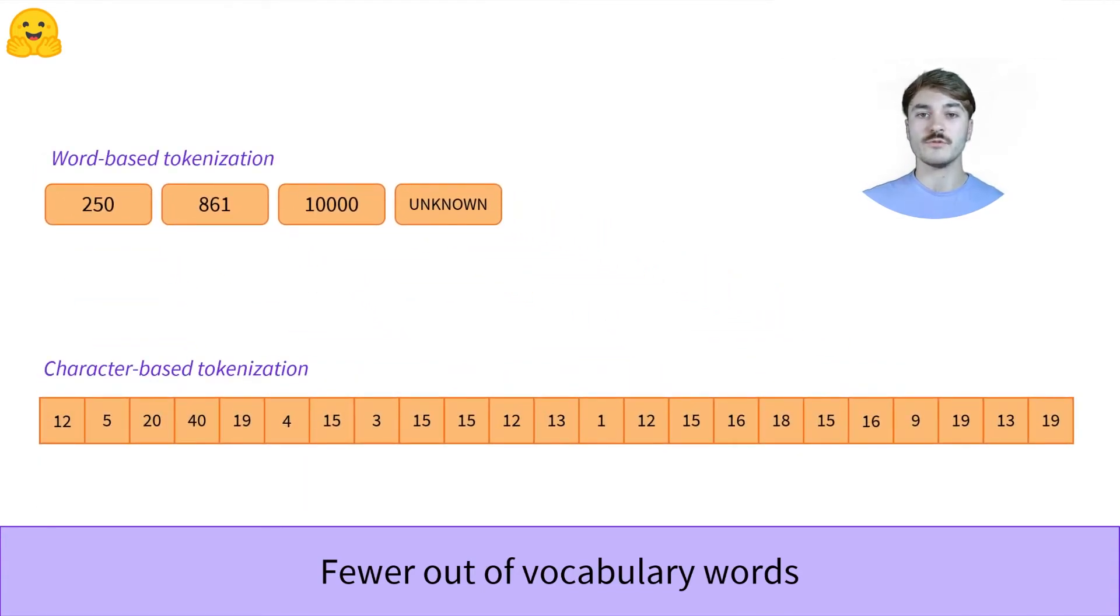This leads to another issue with character-based tokenizers. Their sequences are translated into very large amounts of tokens to be processed by the model, and this can have an impact on the size of the context the model will carry around. It will reduce the size of the text we can use as input for a model, which is often limited.